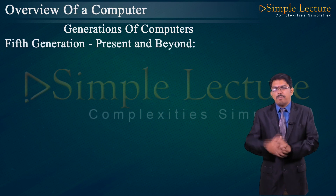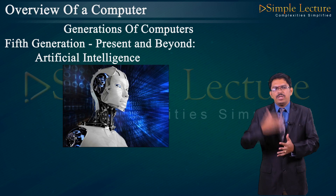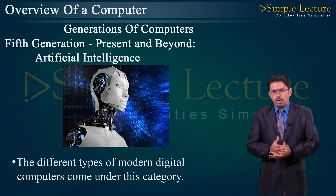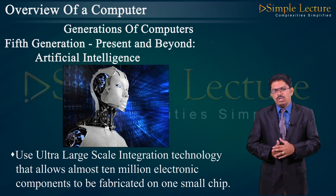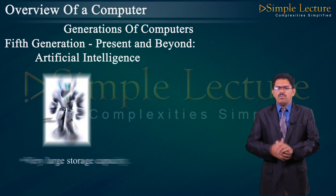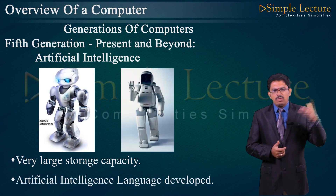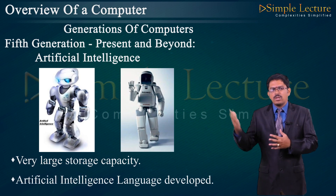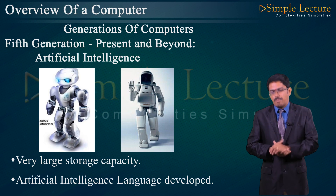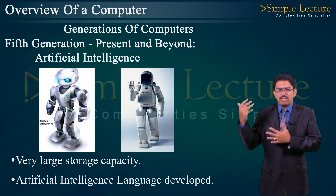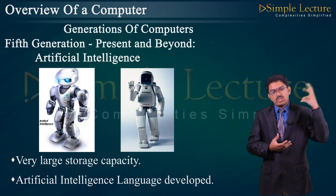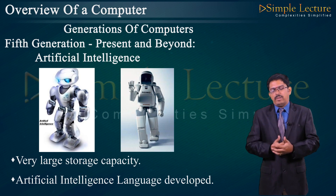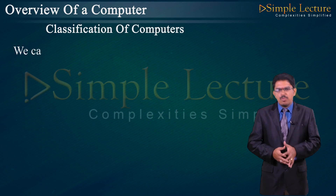Fifth Generation (present and beyond): artificial intelligence was invented during the fifth generation. Different types of modern digital computers come under this category. It uses ultra-large scale integrated technology allowing almost 10 million electronic components to be fabricated on a small chip. Very large storage capacity is available, artificial intelligence can be developed, and robotics can be designed using fifth generation computers using the concept of artificial intelligence.